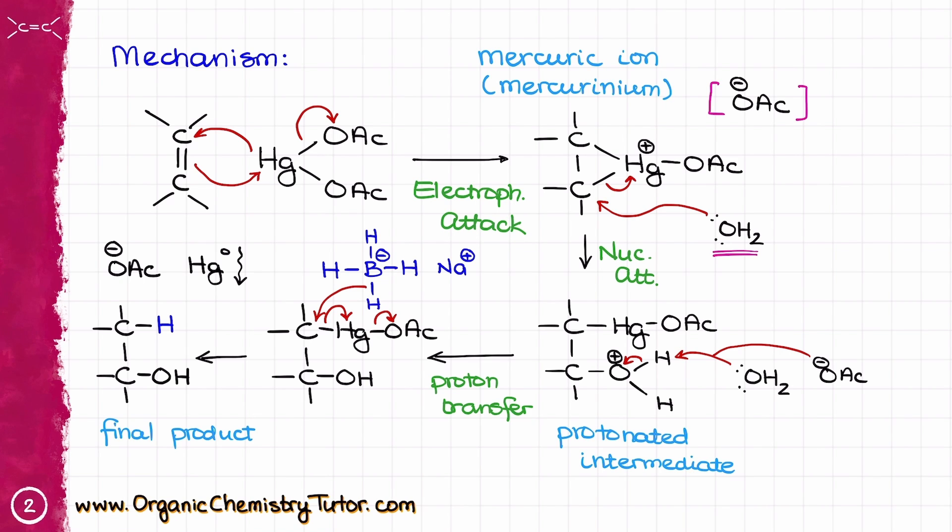so nowadays people try to avoid this type of chemistry as much as possible and there are other methods that have been developed that accomplish the same but without the use of mercury and they're significantly less toxic. However within the scope of the sophomore organic chemistry we're not covering those methods and we still teach organomercury chemistry like this although it's a little bit archaic. But I digress.